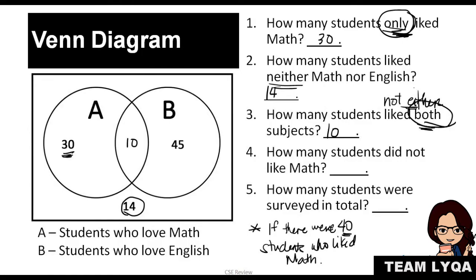Number 4: How many students did not like math? When it says 'did not like math,' we're looking outside of circle A. The common mistake is to answer 45, forgetting the 14. But if you don't like math, that includes the 14 outside as well — kahit na ayaw mo rin ng English, kasama ka. So the answer is 45 plus 14, which is 59.